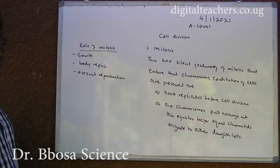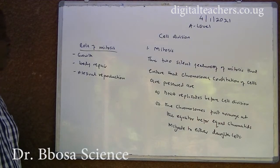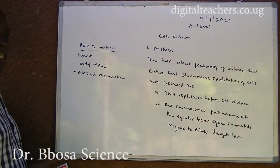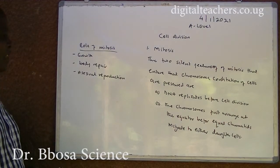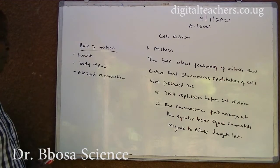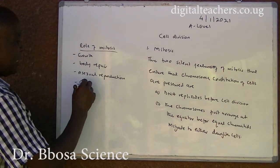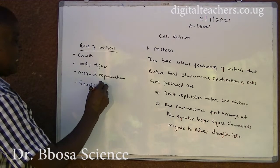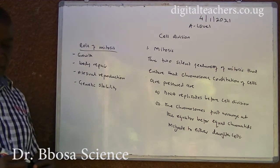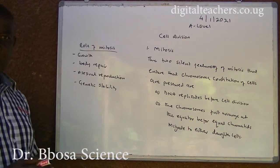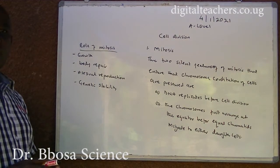The roles of mitosis are: growth — cell division leads to growth; body repair — cell division replaces damaged cells; asexual reproduction; and genetic stability — mitosis ensures that each cell in the body has the same DNA constitution.